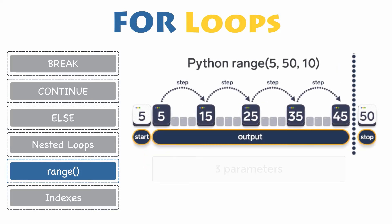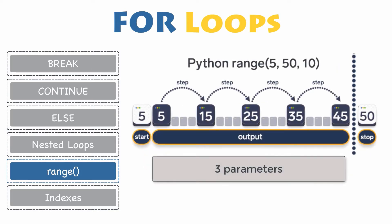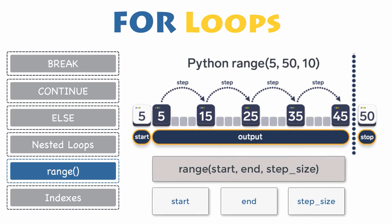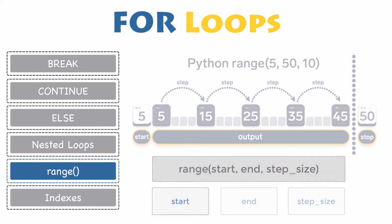A range function has three parameters, which are starting, ending, and step parameters. You can define each one of them as range(start, stop, step size). This function does not store all the values in memory — it would be inefficient. So it remembers the start, stop, and step parameters and generates the next number on the go.